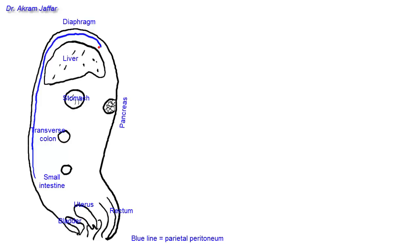The peritoneum is reflected from the diaphragm onto the diaphragmatic surface of the liver. As it is reflected onto the liver it becomes visceral peritoneum — I'll change the color to pink. It covers the diaphragmatic and then the visceral surface of the liver, and close to the hilum of the liver it is reflected as the anterior layer of the lesser omentum.